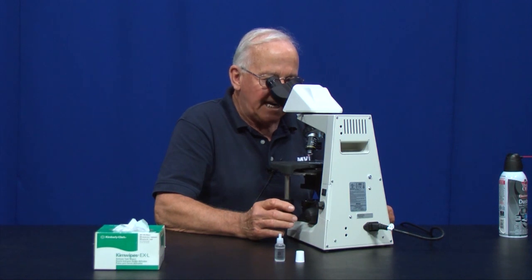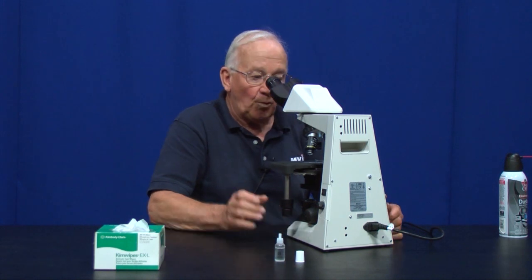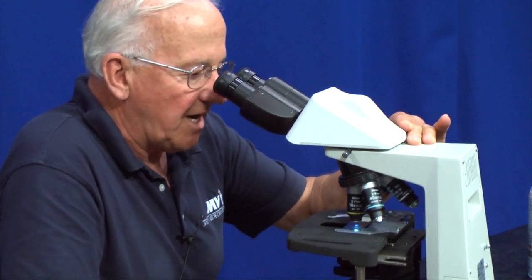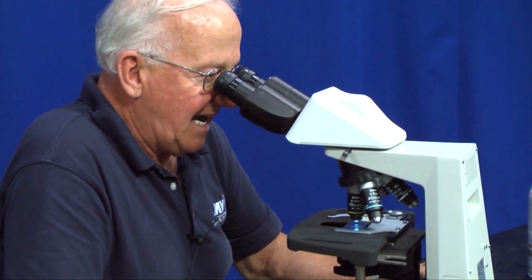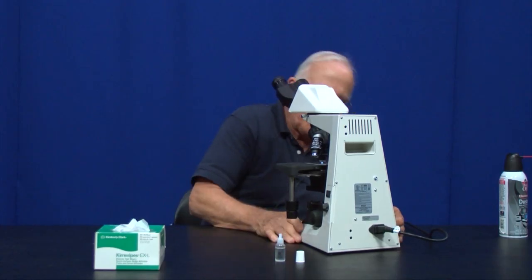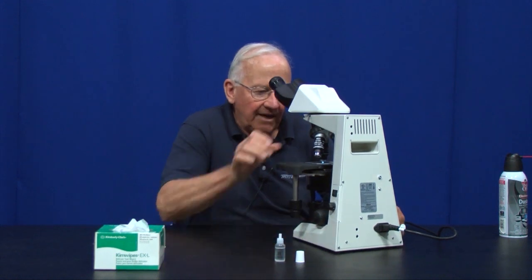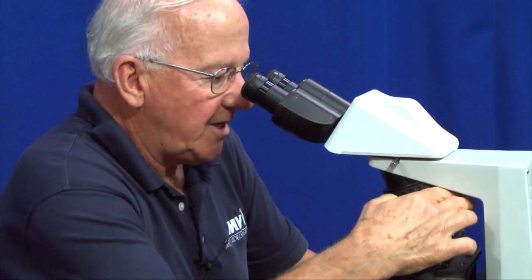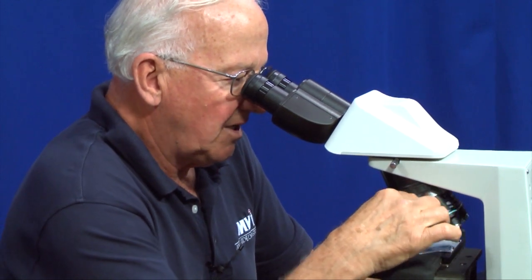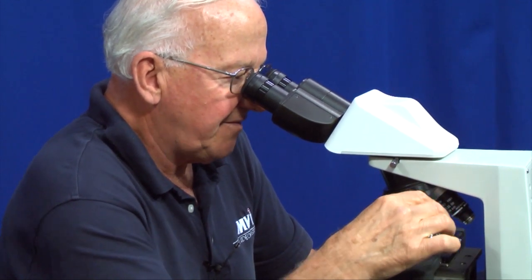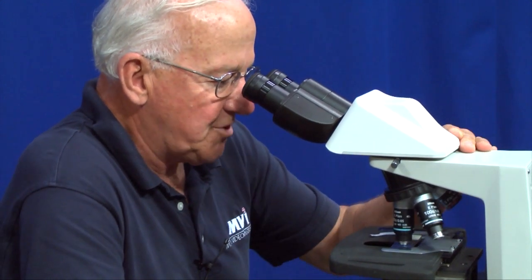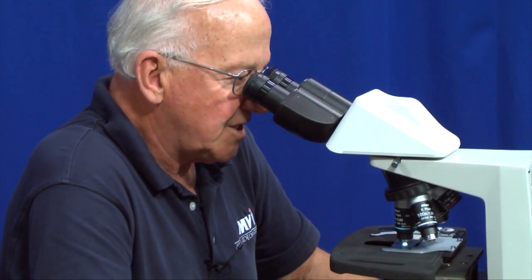Now we've got the slide. We have found the specimen using what we call the scanning lens. After that, we're going to go to the 10x objective and refocus a little bit. We have this specimen on the stage now and we have the eyepieces set. We started with the 4x objective, went up to the 10x objective in focus, and we're going to go up to the 40x objective. Focus is beautiful.